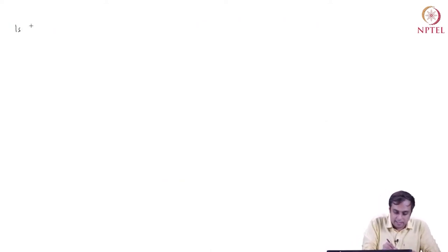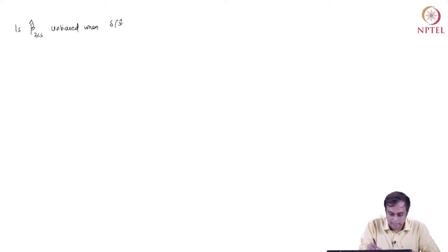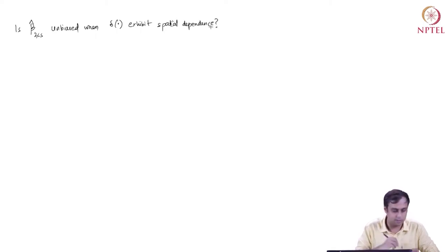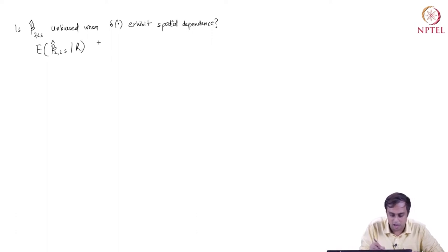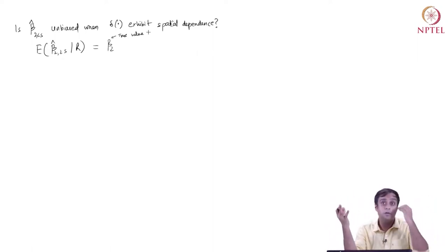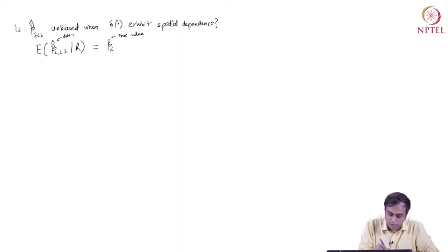We are asking: is beta-hat_2_LS unbiased when the model errors exhibit spatial dependence? Specifically, does the expectation of beta-hat_2_LS given the data on R equal the true value beta_2? We don't ever observe the truth, but we are still able to figure out whether what we have gotten from a data-driven estimate is close enough to the truth.